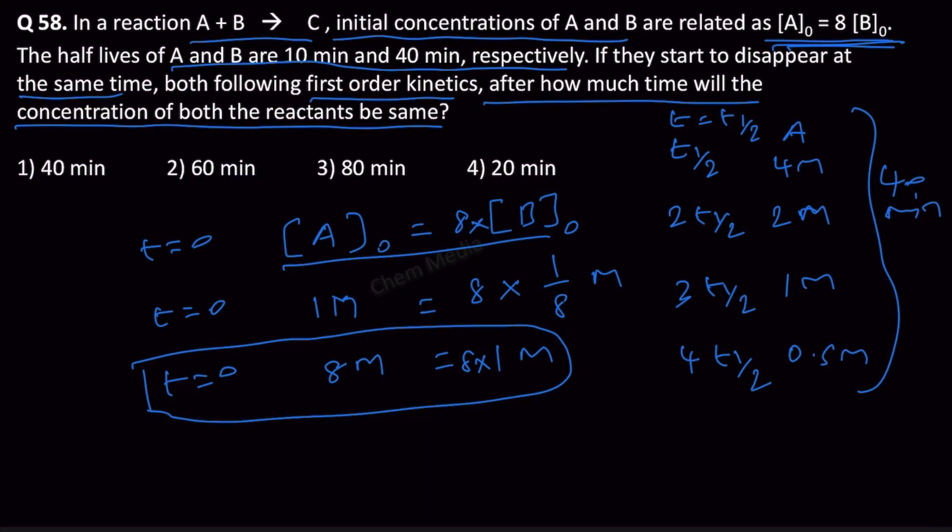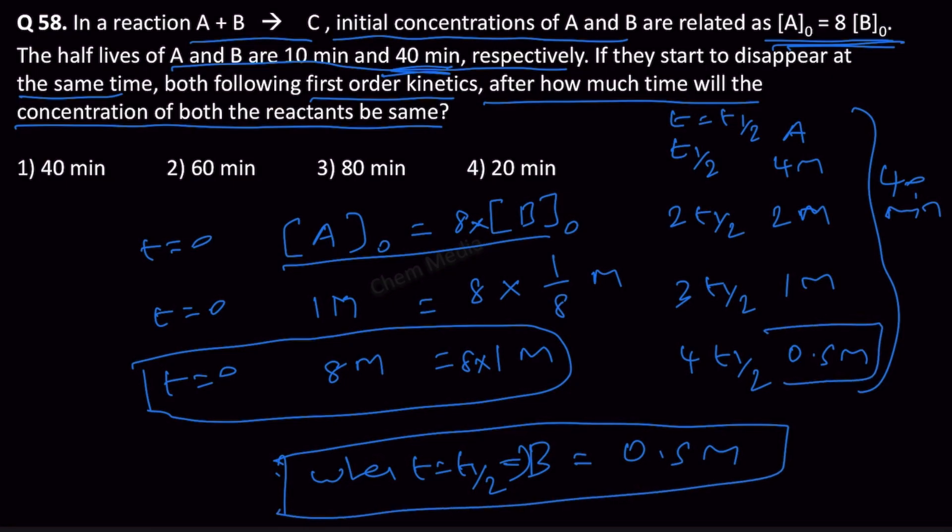So at 40 minutes, what will happen to B? B will become 0.5 molar. When t equals t half for B, B becomes 0.5 molar because the half-life is 40 minutes. At that time, B will be 0.5 and A also will be 0.5. So option 1 is correct.